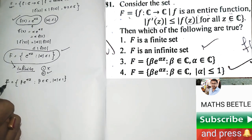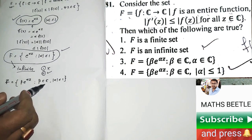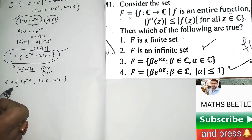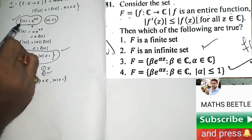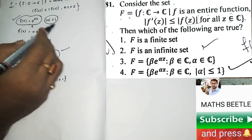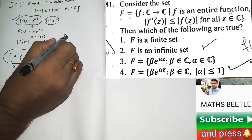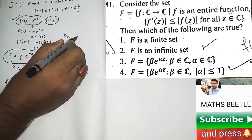Come to the fourth option where they have given us capital F is going to be this kind of set, and it is almost the same kind of F as we have taken earlier in this question. Where simply we have taken F(z) equals e to the power alpha z, and if you take F(z) equals beta e to the power alpha z, where beta belonging from C and mod of alpha...